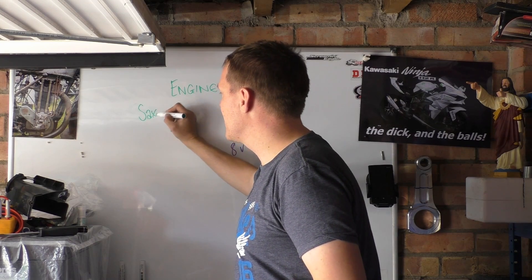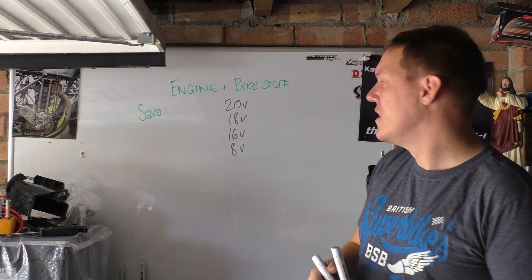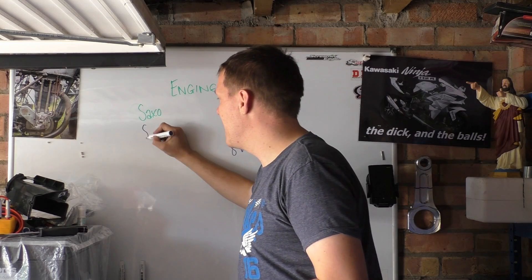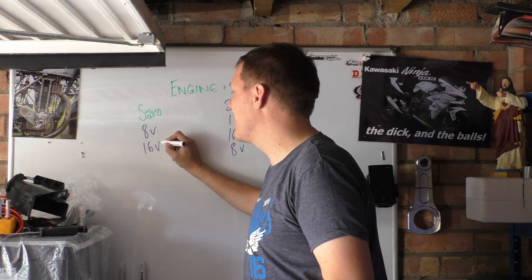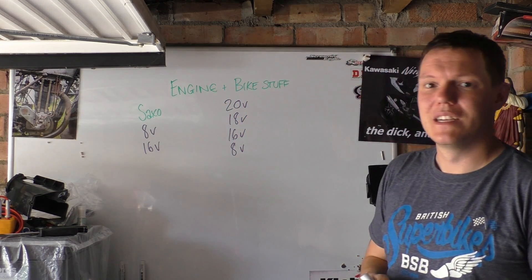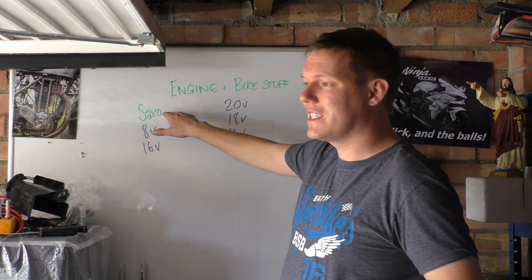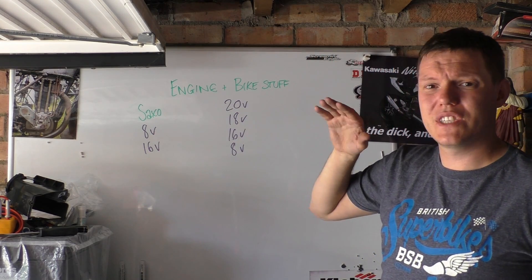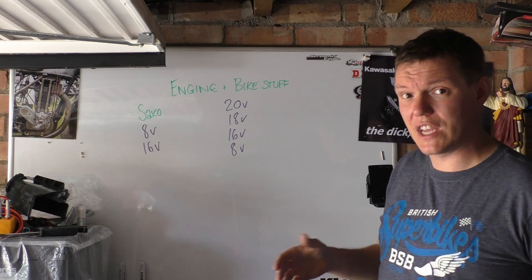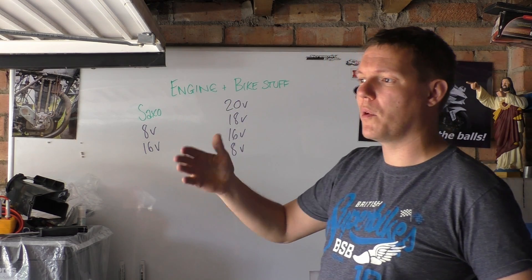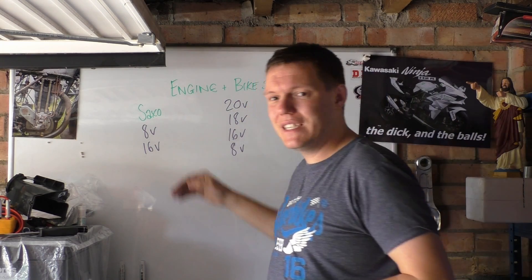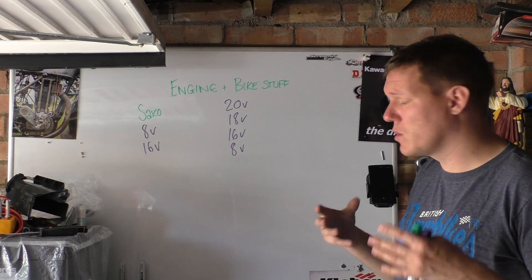So let's take a car like a Citroen Saxo. That came in an 8 valve and a 16 valve variety, so it's the same car even for the same engine size. At one point, say 1.4, there was an 8 and a 16 valve variant. So what does this mean?